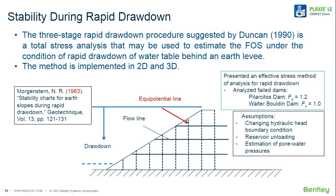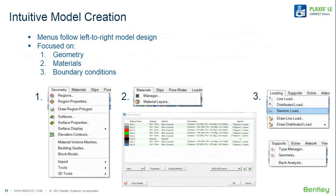Looking at the user interface, we're dealing with a boundary value problem with three main aspects: geometry, materials, and boundary conditions. The menu system is organized left to right to guide you through that process — first entering geometry in the CAD window, second entering material properties, and third applying loads, which may be external such as line loads or distributed loads, or internal such as supports, anchors, tiebacks, and geomembranes.